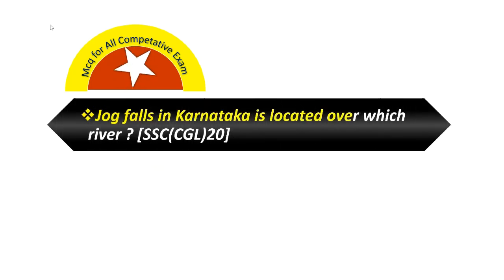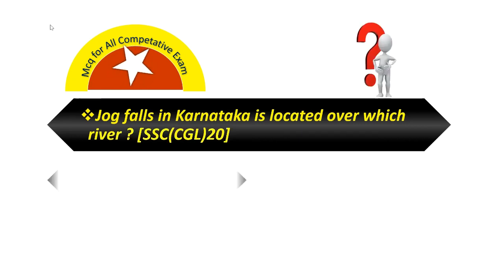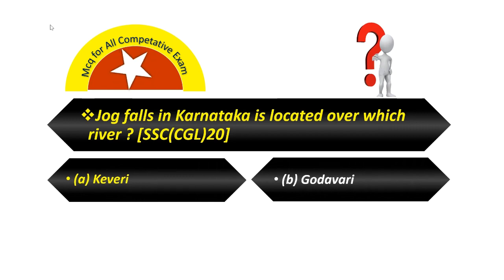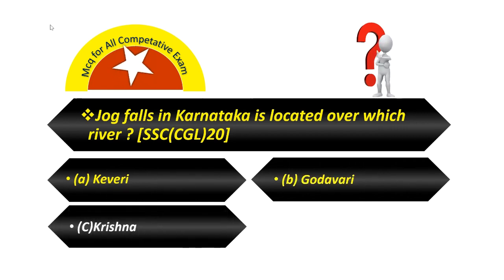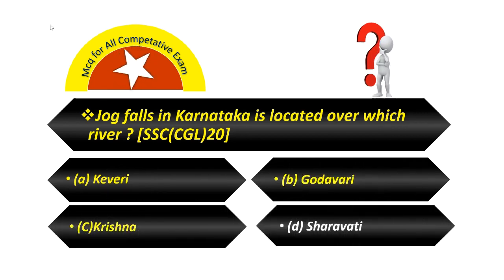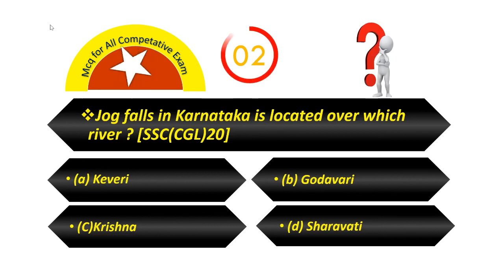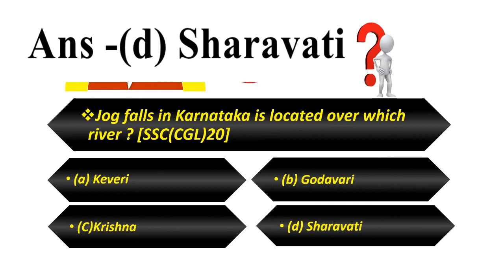Jog Falls in Karnataka is located over which river? Option A — Kaveri. Option B — Godavari. Option C — Krishna. Option D — Sharavati. Answer is Sharavati.